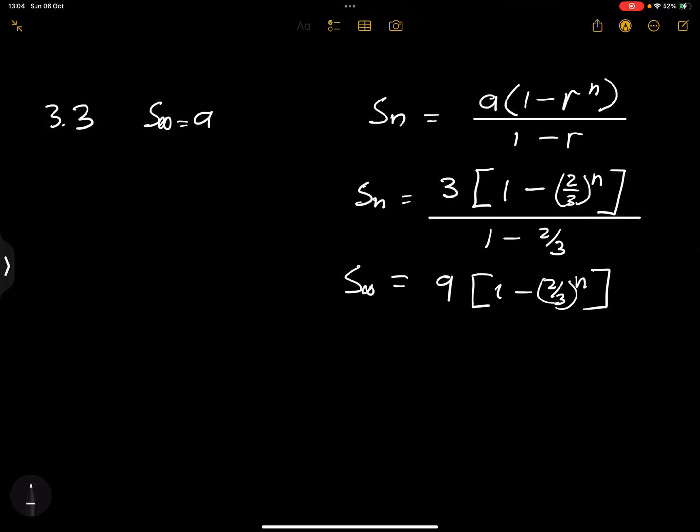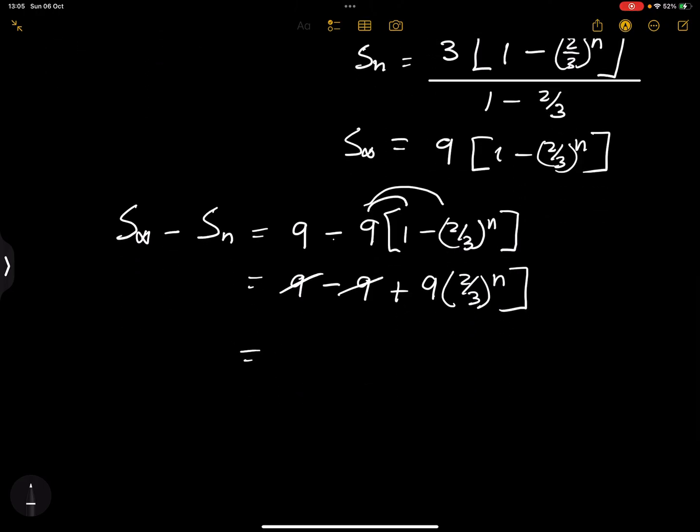And in this case, we are going to say this is 9 minus 9 into 1 minus 2 over 3. In fact, why don't we actually multiply the 9 inside that bracket? So that's exponent N. This would be 9 minus, so 9 times 1 would be 9. 9 times that entire expression, negative times a negative becomes a positive. And we're left with 9 times 2 over 3 to the exponent N. And we can cancel those two out.